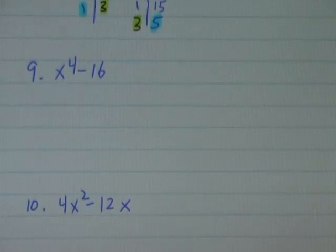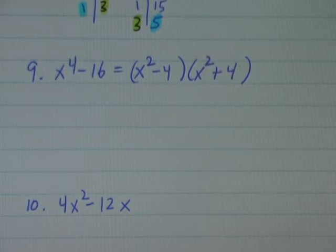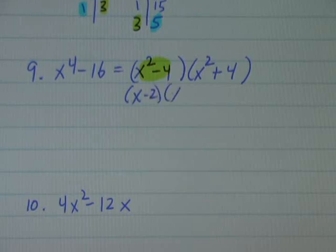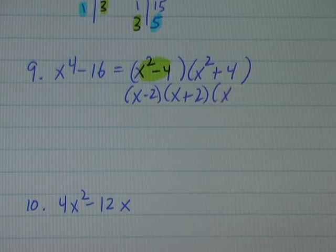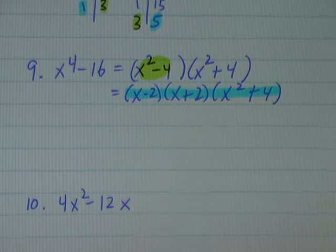Number 9. I notice that this is a difference of squares. The square root of x to the 4th is x squared, and the square root of 16 is 4. So factored as a difference of squares, this is x squared minus 4 times x squared plus 4. But I'm not done — x squared minus 4 is also a difference of squares, and I can factor that as x minus 2 times x plus 2. So completely factored, x to the 4th minus 16 equals x minus 2 times x plus 2 times x squared plus 4.